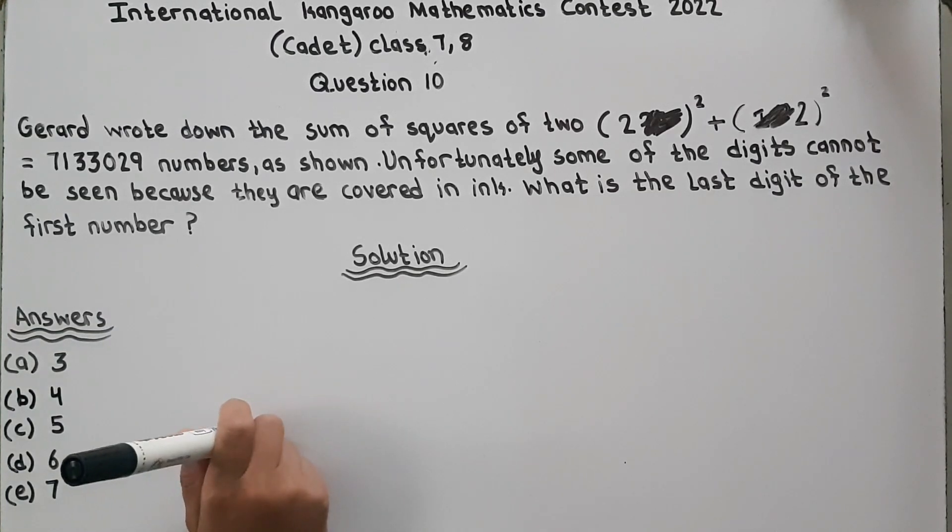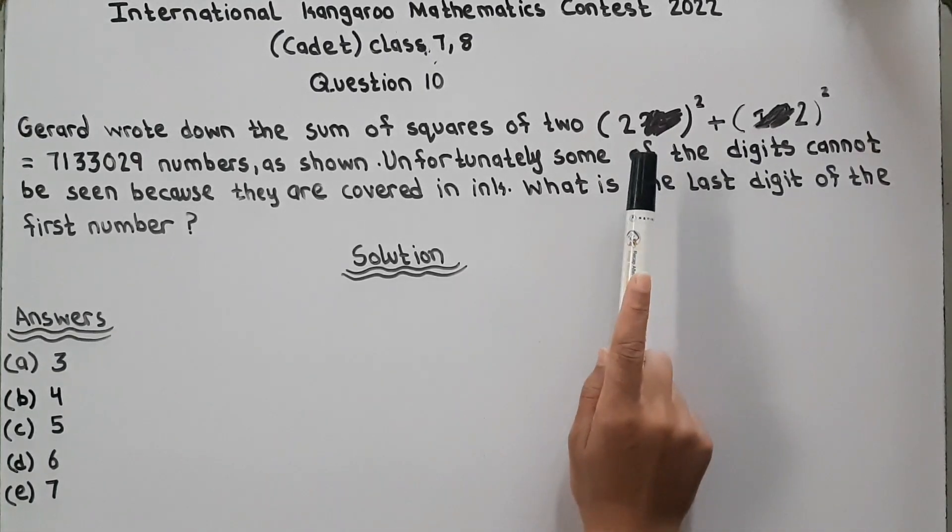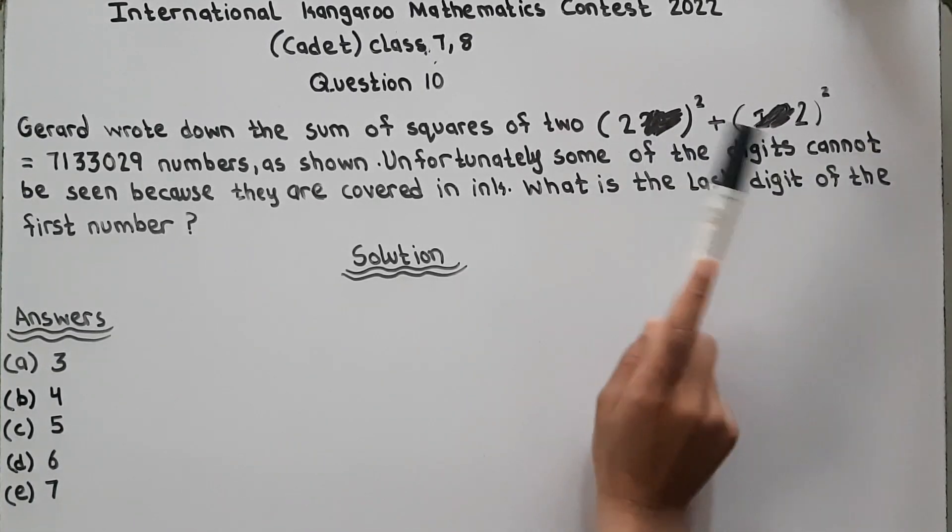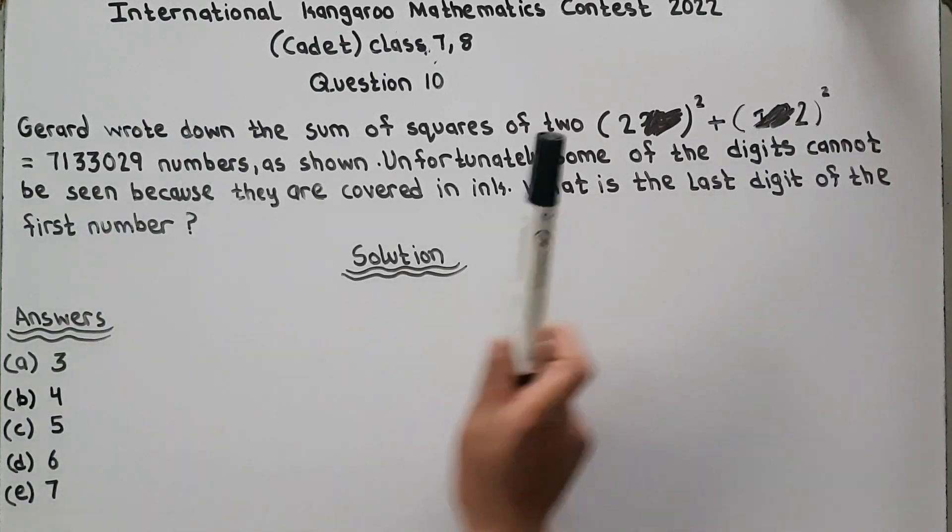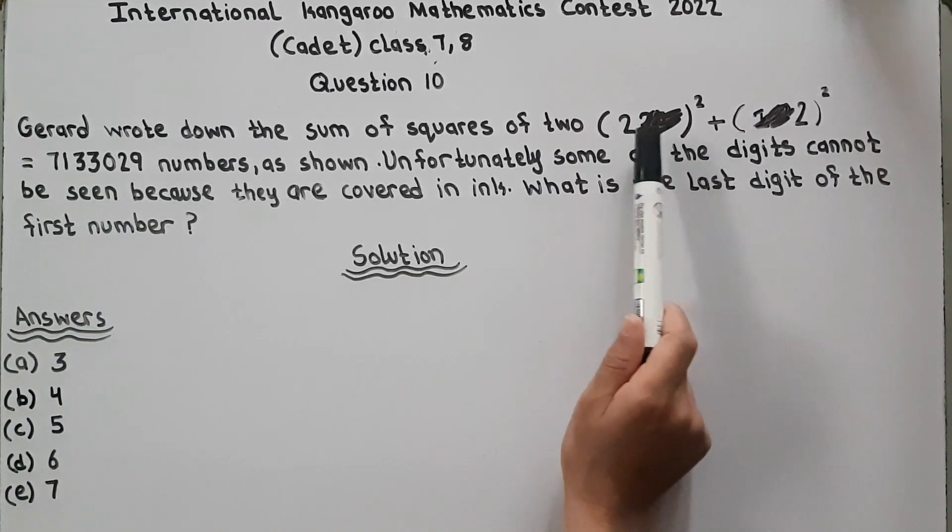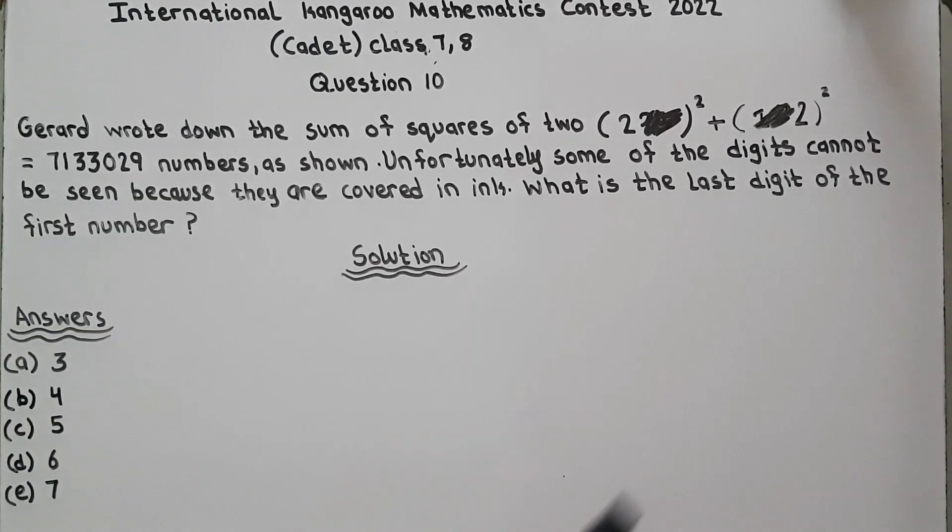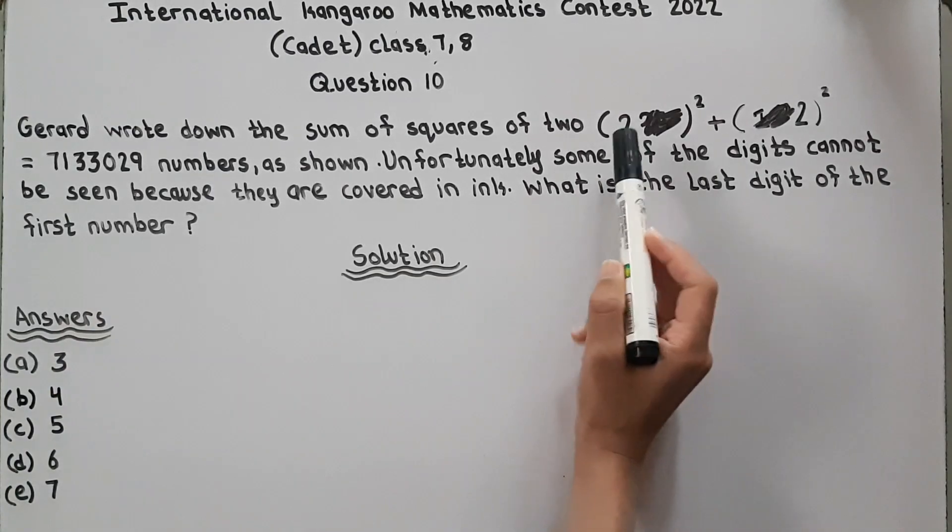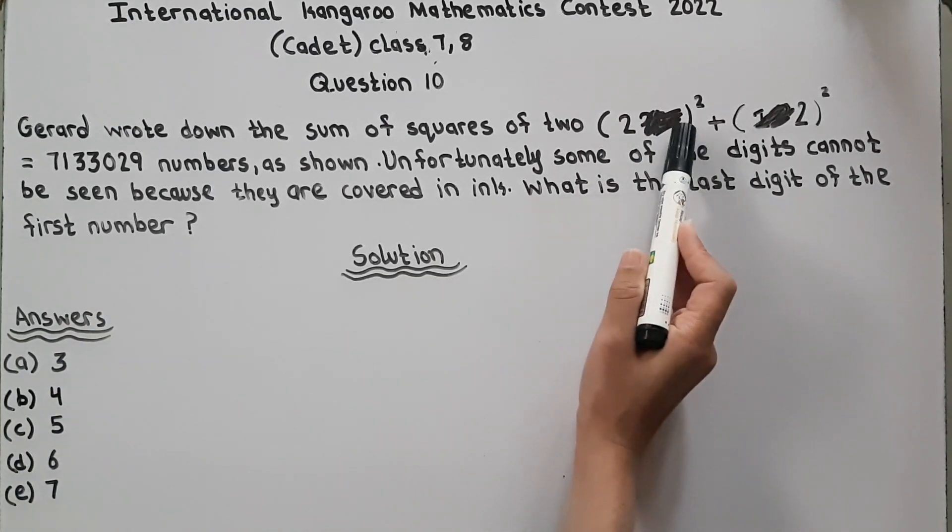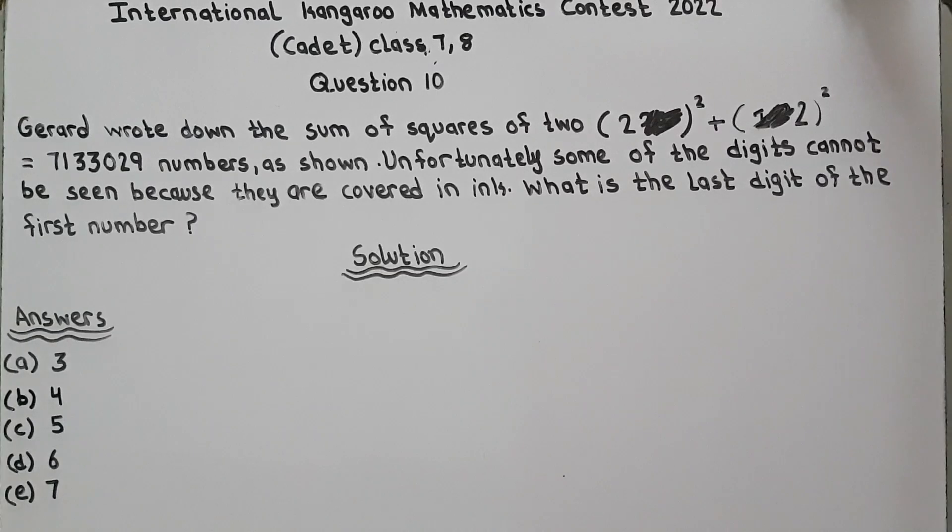They are saying that Gerard wrote down the sum of squares of two numbers, but unfortunately some of the numbers got covered in the ink. So they are asking what is the last digit of the first number. You have to find this.